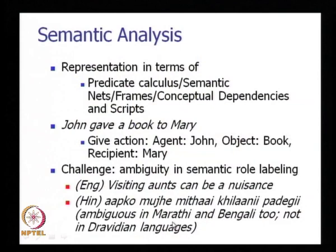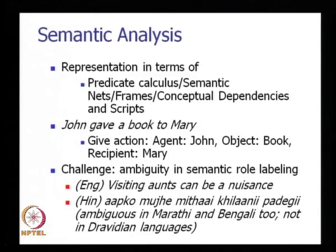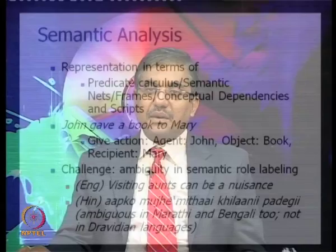Indo-European languages close to Hindi — like Marathi and Bengali — retain this ambiguity. In Bengali: 'aapna ke amay misti khawate hobby' — this sentence is ambiguous because it does not specify who is giving sweets to whom. It is also ambiguous in Marathi, but not ambiguous in Dravidian languages, where you must produce the sentence after resolving the semantic role, because that determines the case markers and suffix information on the nouns. Just as 'visiting aunts can be a nuisance' is ambiguous in English, in an Indian language sentence you must commit to the semantic role.